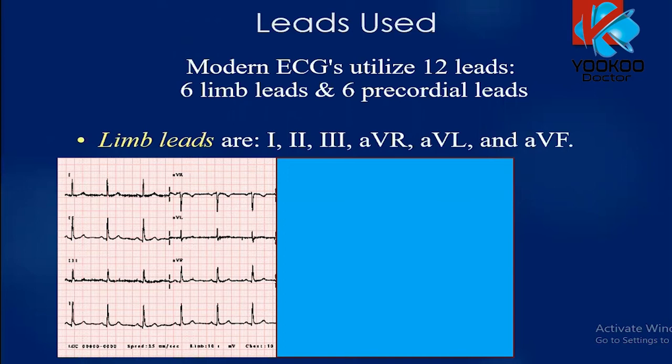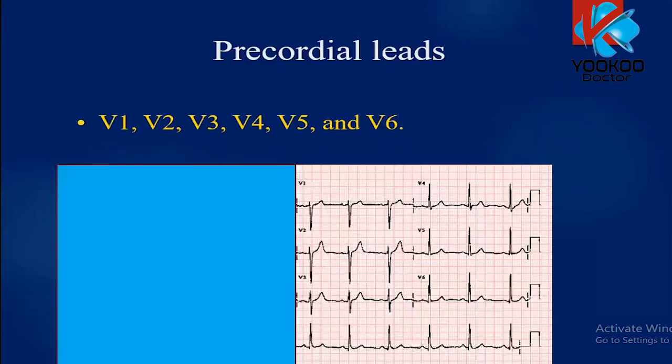The limb leads shown are leads 1 to 3 and the augmented leads AVR, AVL, and AVF. The precordial leads displayed are V1 to V6 — you can see V1, V2, V3, V4, V5, V6 on this ECG. There is also a rhythm strip at the bottom.